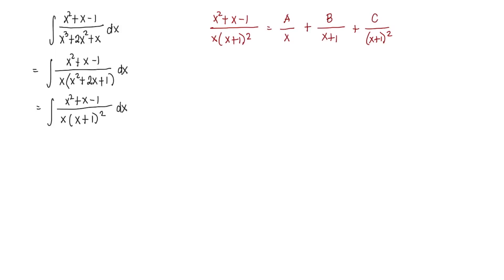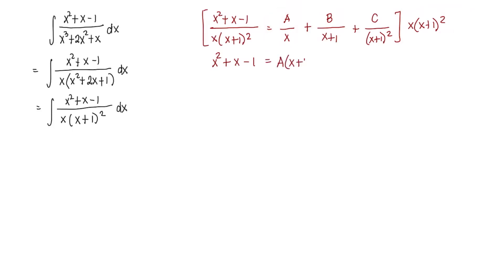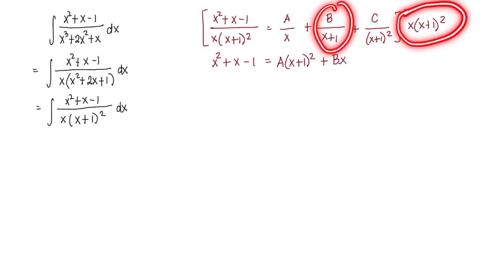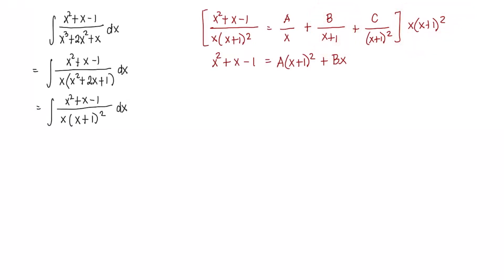Next, we get rid of the denominators by multiplying the entire equation by x times the quantity x plus 1 squared. What remains on the left side is x squared plus x minus 1. Multiplying A over x by the denominator cancels x, leaving x plus 1 squared. For B, we cancel x plus 1, leaving x times x plus 1. For C, x plus 1 squared cancels completely, leaving just x.